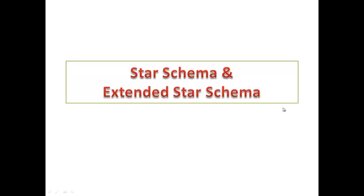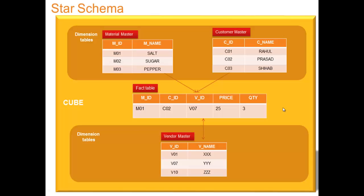Star schema and extended star schema. In a cube, we have fact tables and dimension tables. For any cube, if you create it, there will be a fact table and dimension table. The dimension table will be surrounded by the fact table. In a star schema, the master table will be the dimension table and the transaction table will be the fact table. This is the setup in a star schema.